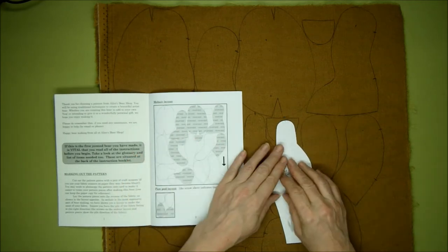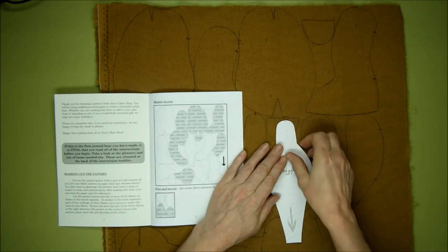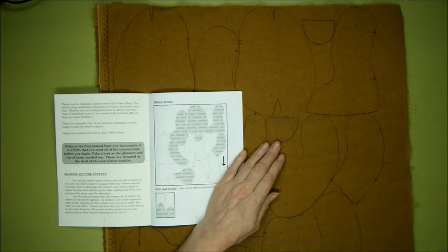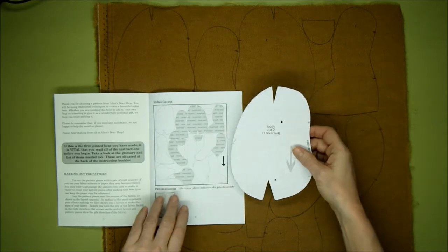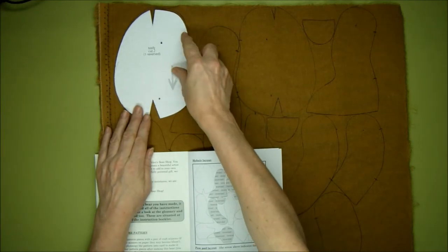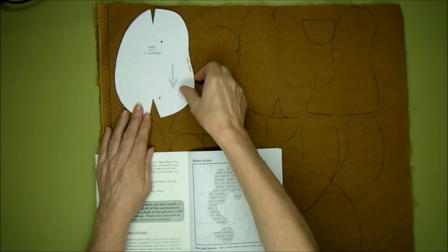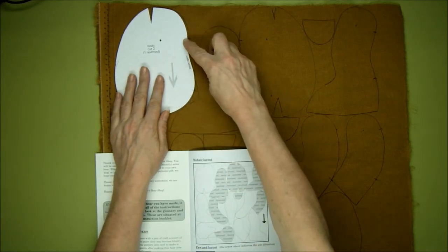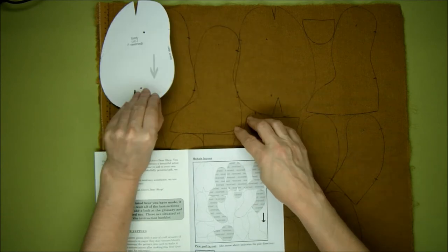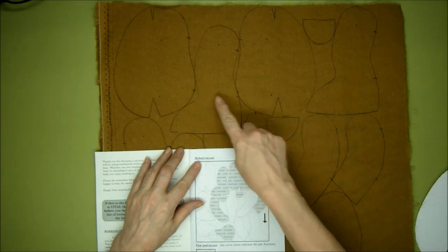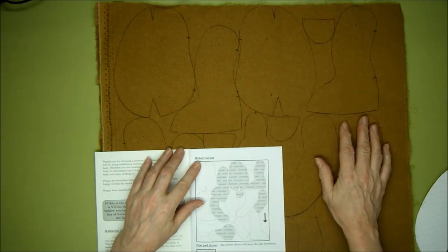Take the time to check that you've got everything. Make sure you've marked things like the points at the end of the head gusset where it will meet the seam of the front of the head. You've got your cotter pin points marked and your back markers for the stuffing.